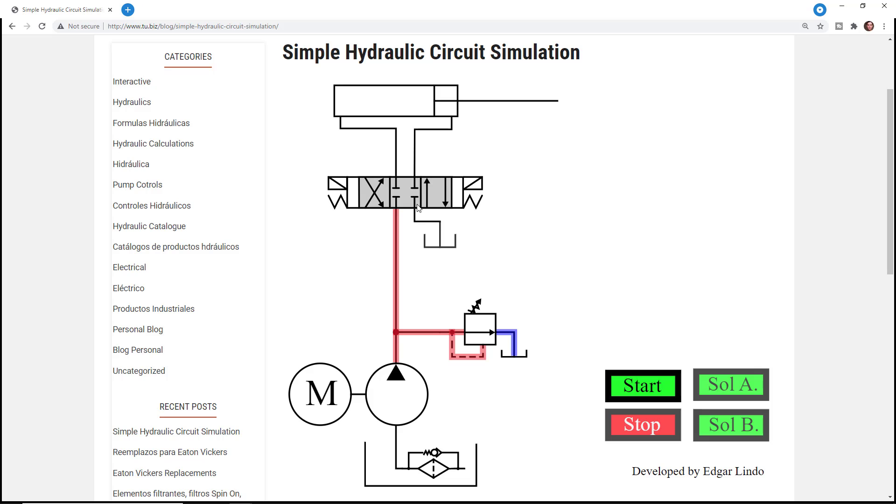Once the cylinder cannot extend anymore, what happened is no more fluid comes through this line because the cylinder cannot discharge any more fluid through there.